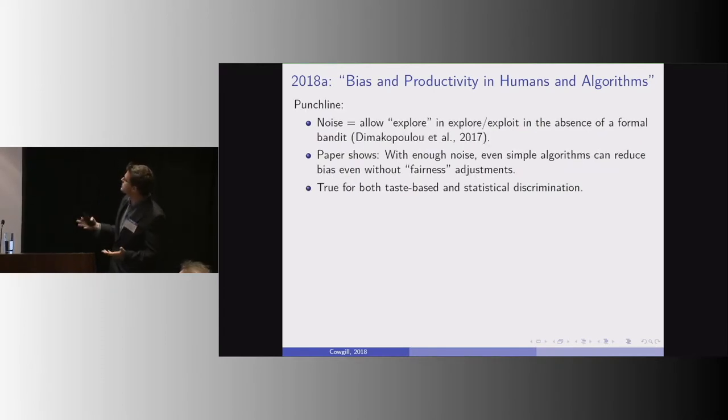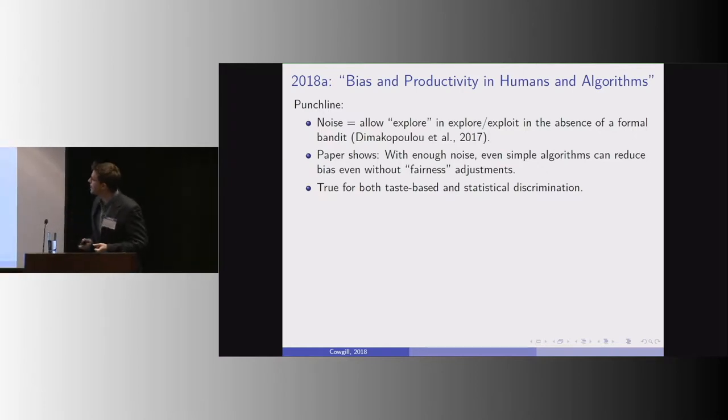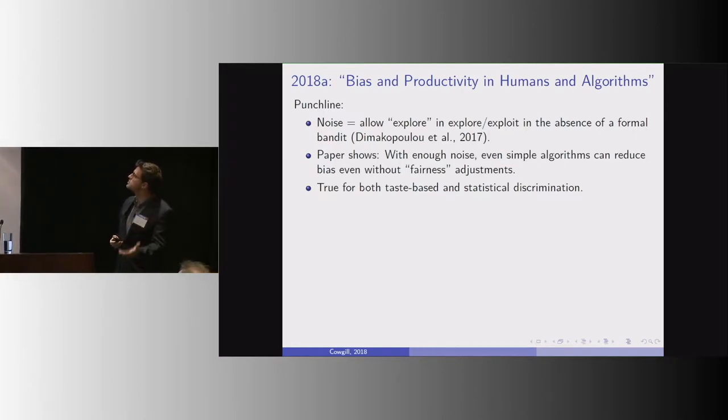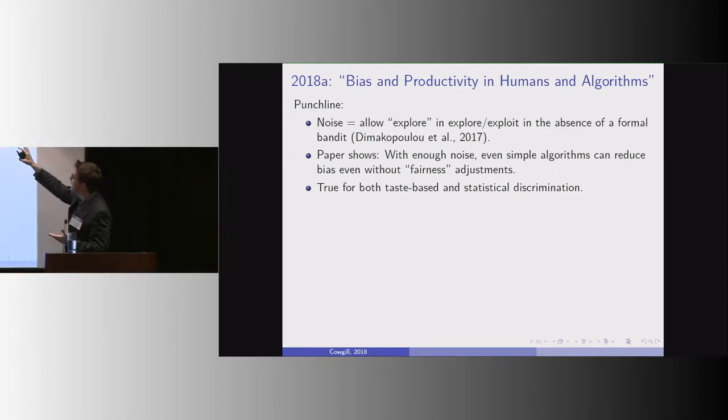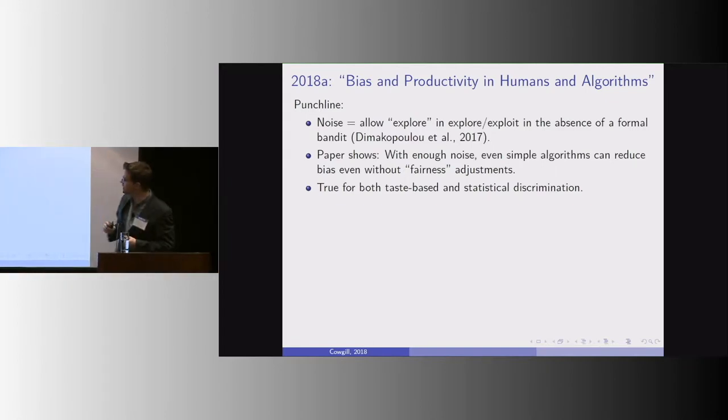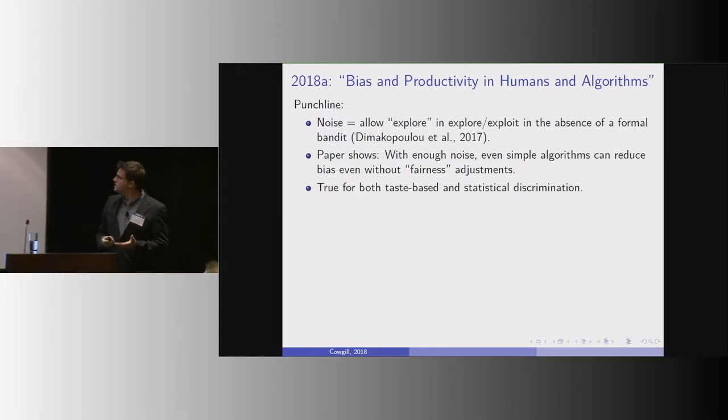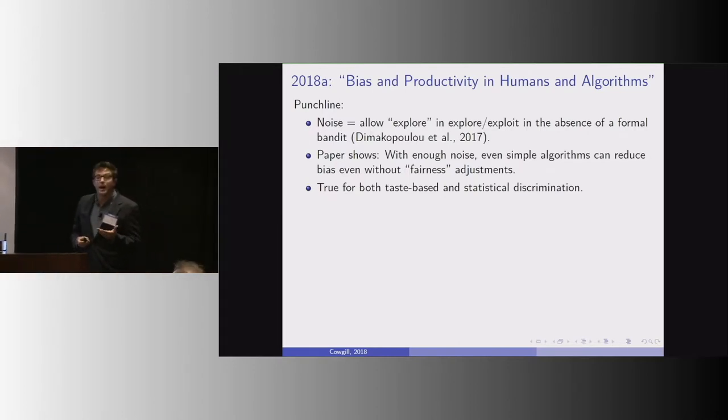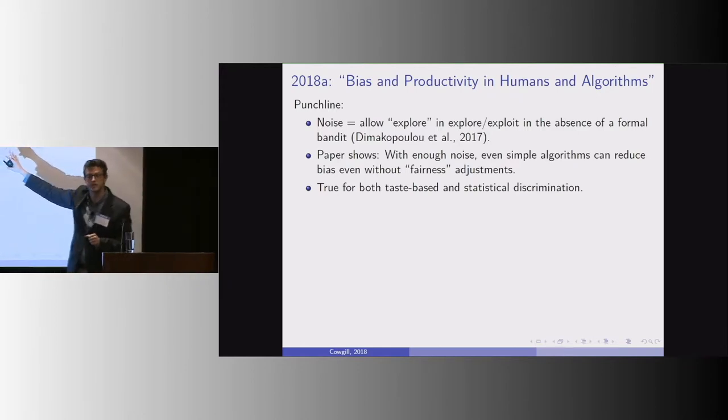In the context of this conference, we've had a paper about bandits. You can think of noise as essentially allowing Explore in an Explore setup without having a formal bandit in place. And with enough noise, even simple algorithms can reduce bias even without sort of special fairness adjustments.